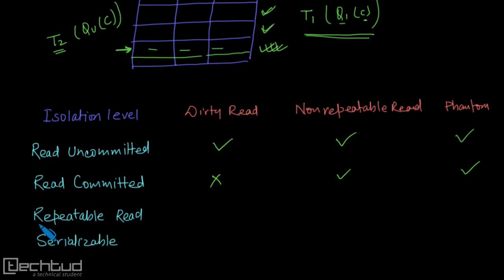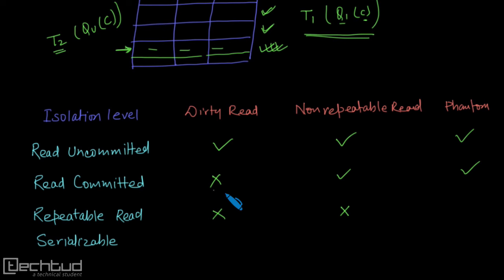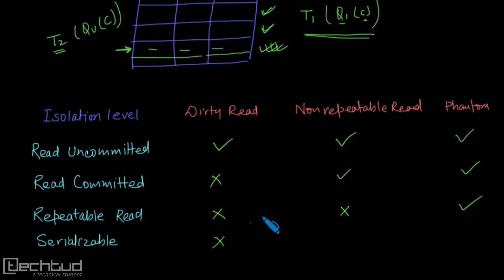In repeatable read, the non-repeatable read problem will not be there and dirty read will not be there either. The only thing remaining is phantom phenomena. For serializable, all violations are taken care of — none of the violations are allowed.